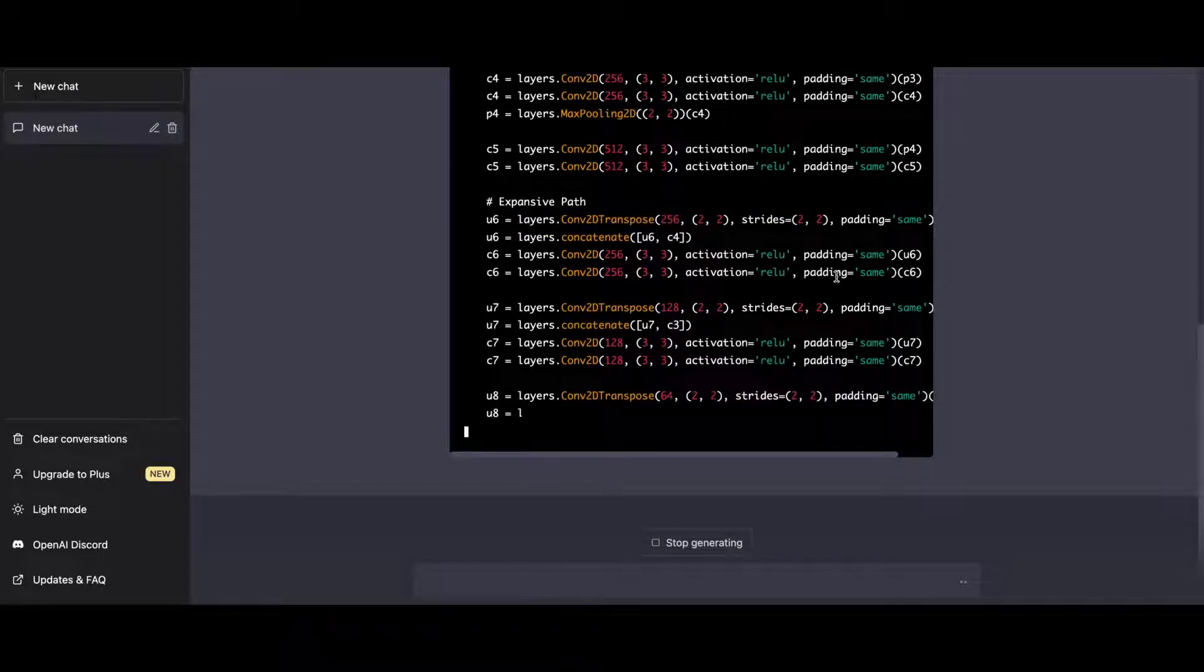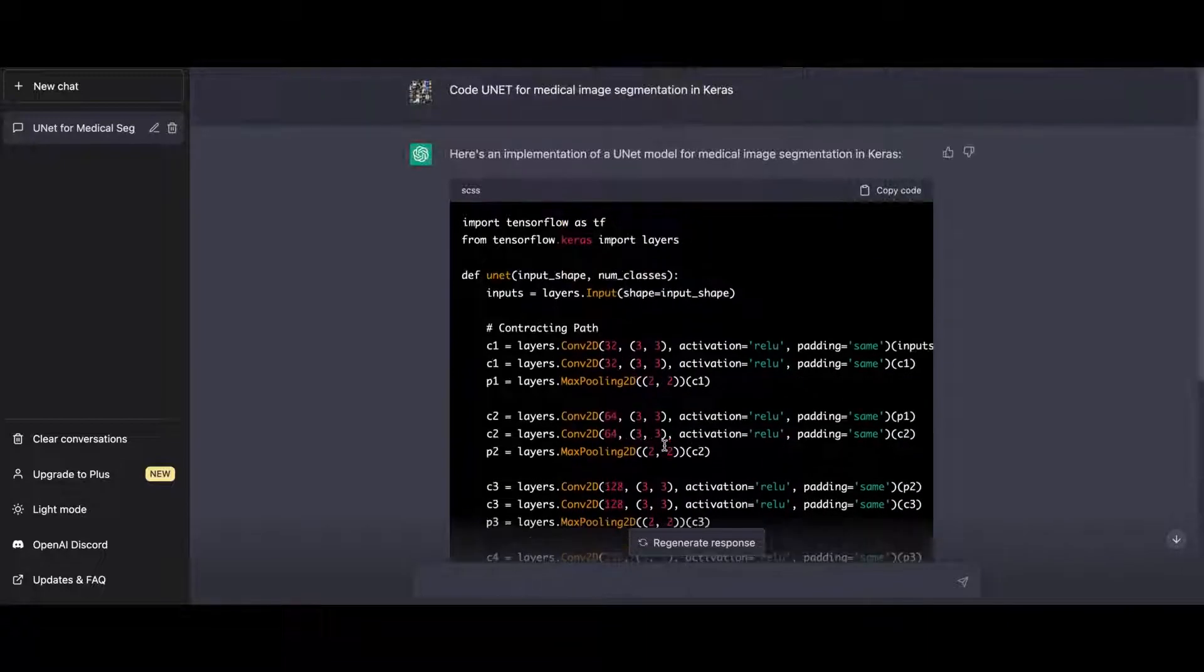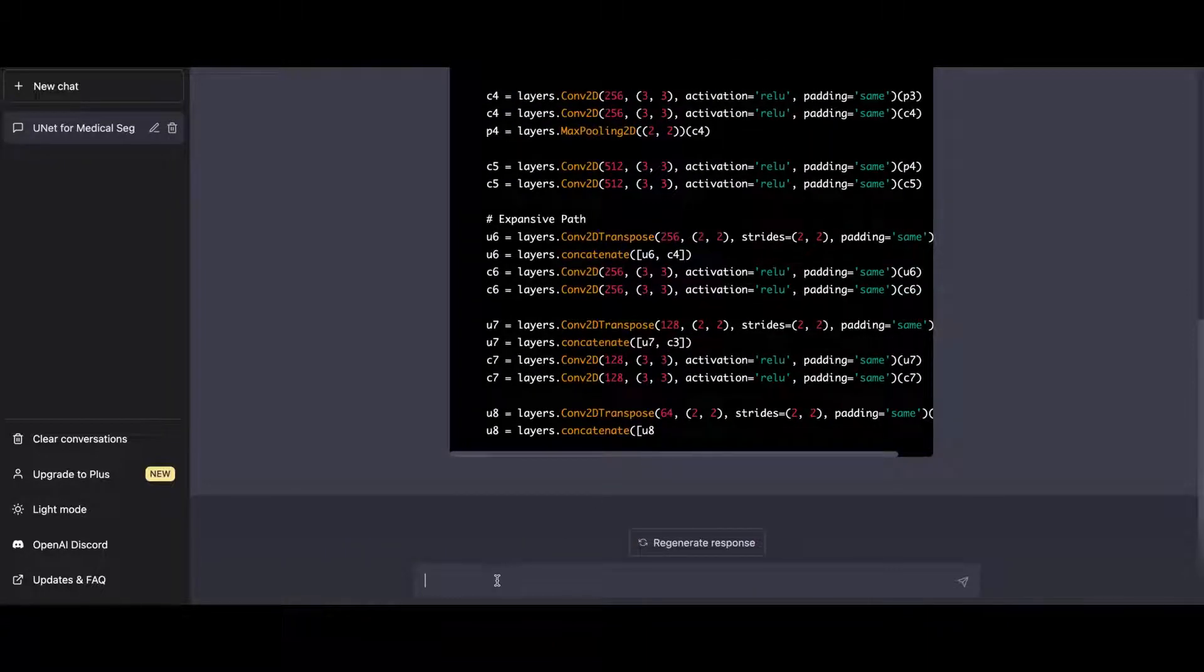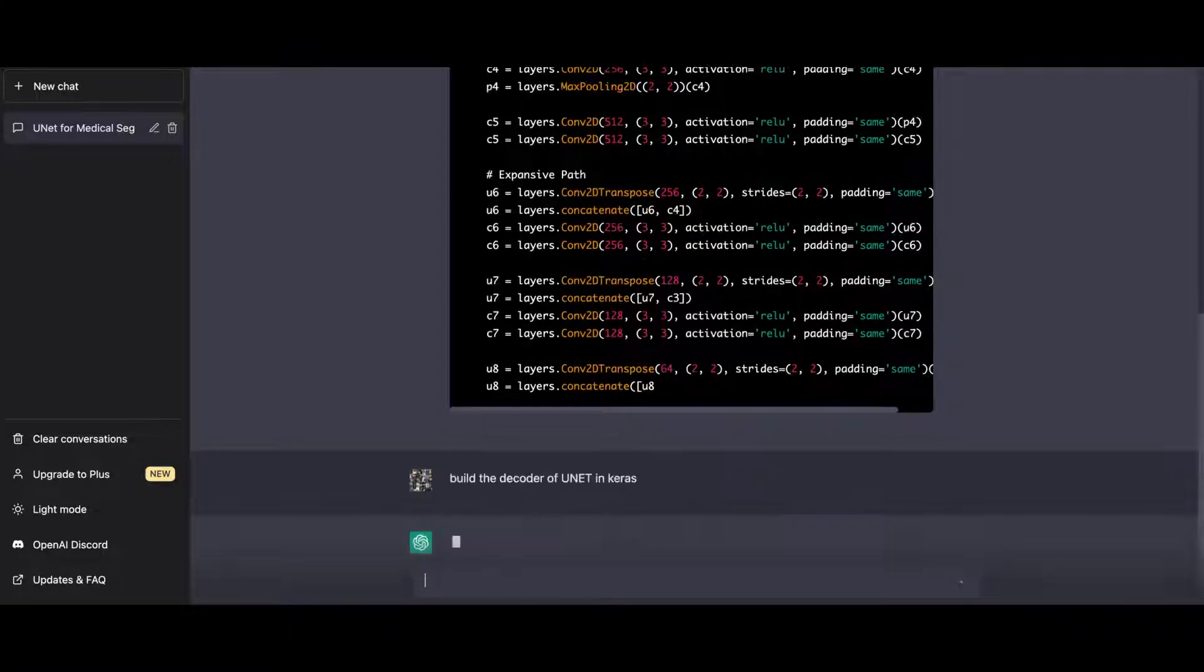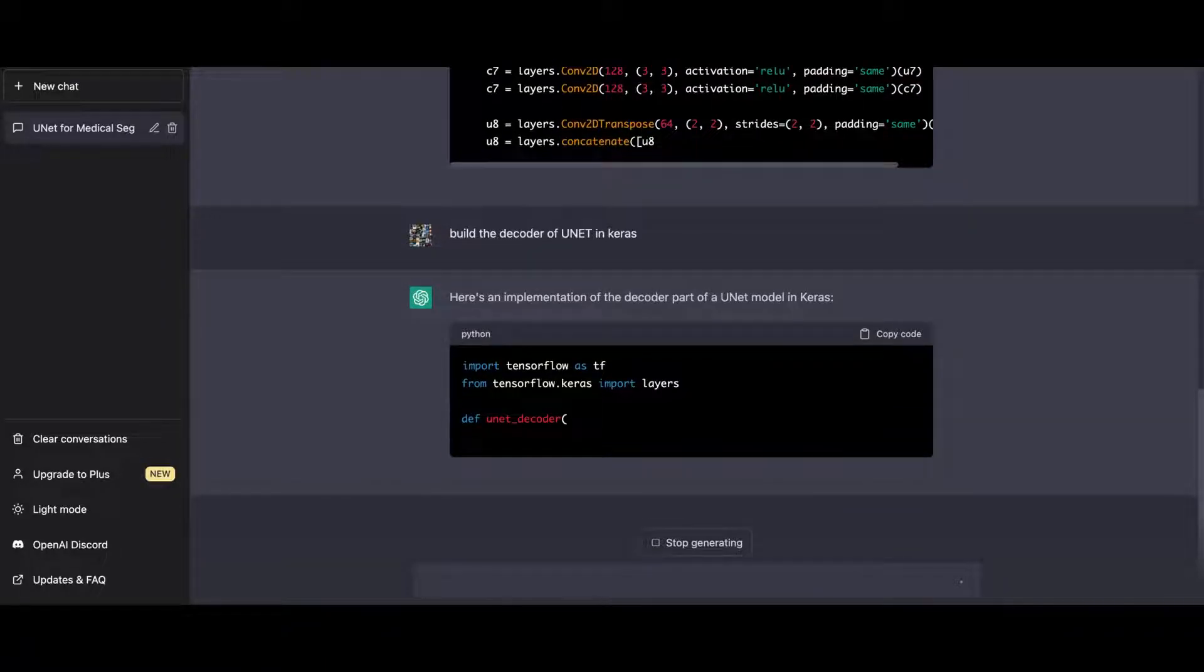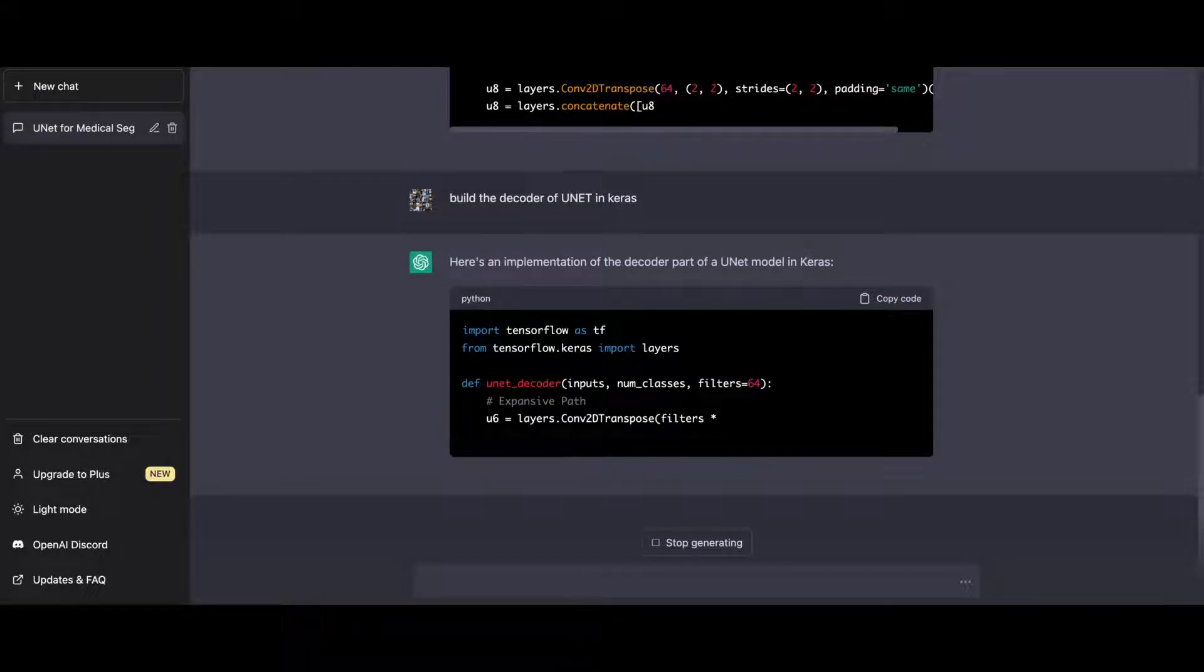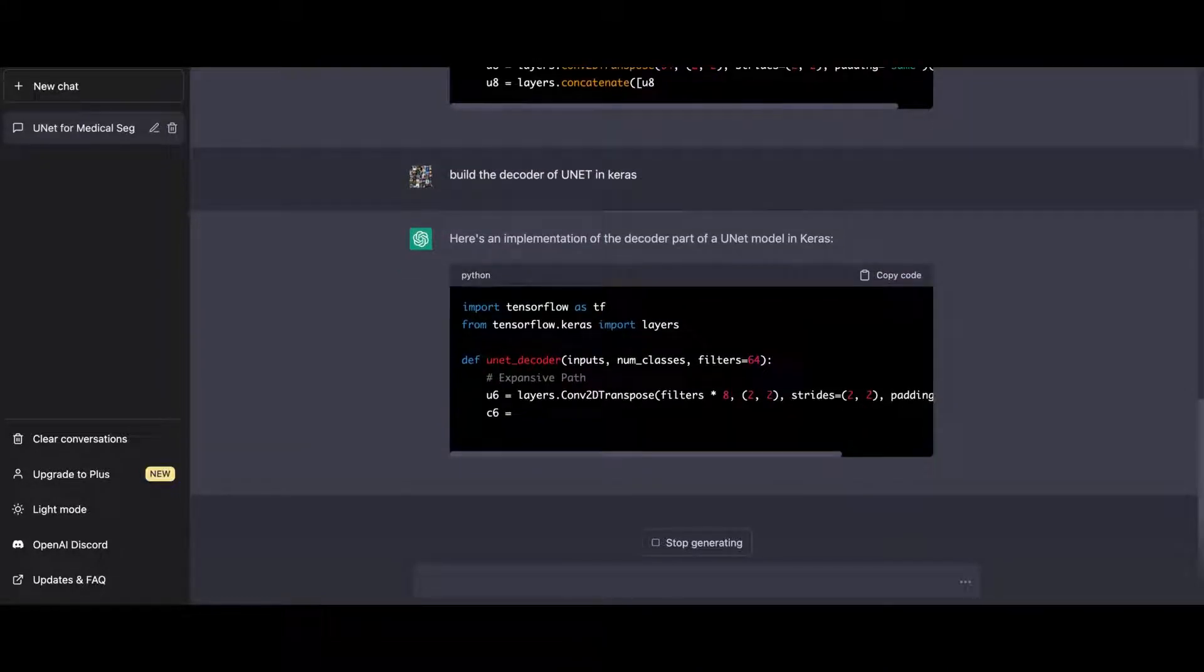Rather than building everything from scratch and testing its boundaries, let's just ask to build the decoder of UNET in Keras. It should be a bit faster to understand. So this is the decoder part, the expanding path. You just define the convolution transpose. You add the functions. You can see here, it's still building. It's basically the reverse operation.